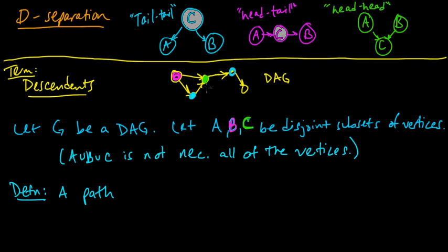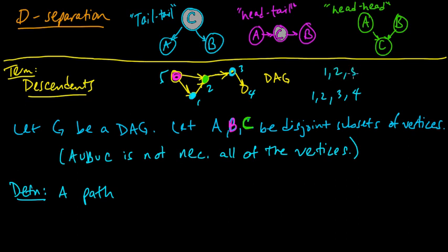So if this was vertex 1, 2, 3, 4, 5, then the sequence of vertices 1, 2, 3, 4 is a path because there's an edge between 1 and 2, between 2 and 3, and between 3 and 4. Another path would be 1, 2, 5 because there's an edge from 1 to 2 and from 2 to 5. But 1, 3, 4 would not be a path because there's no edge between 1 and 3.